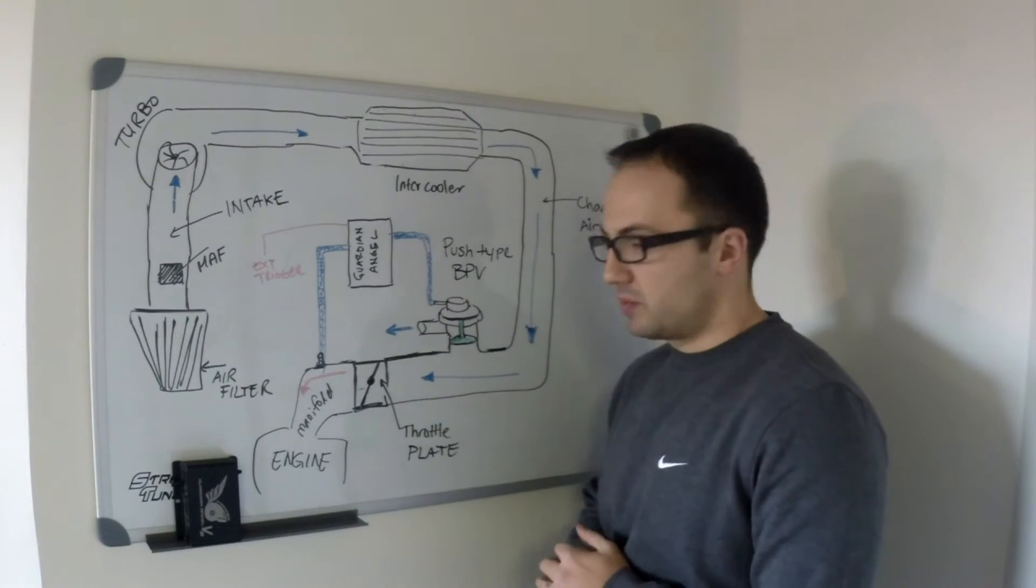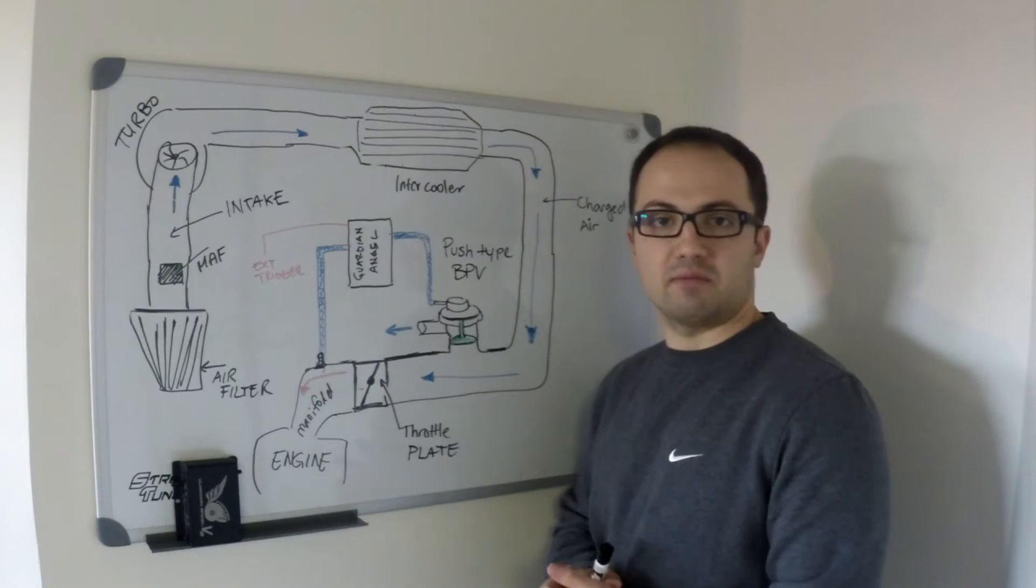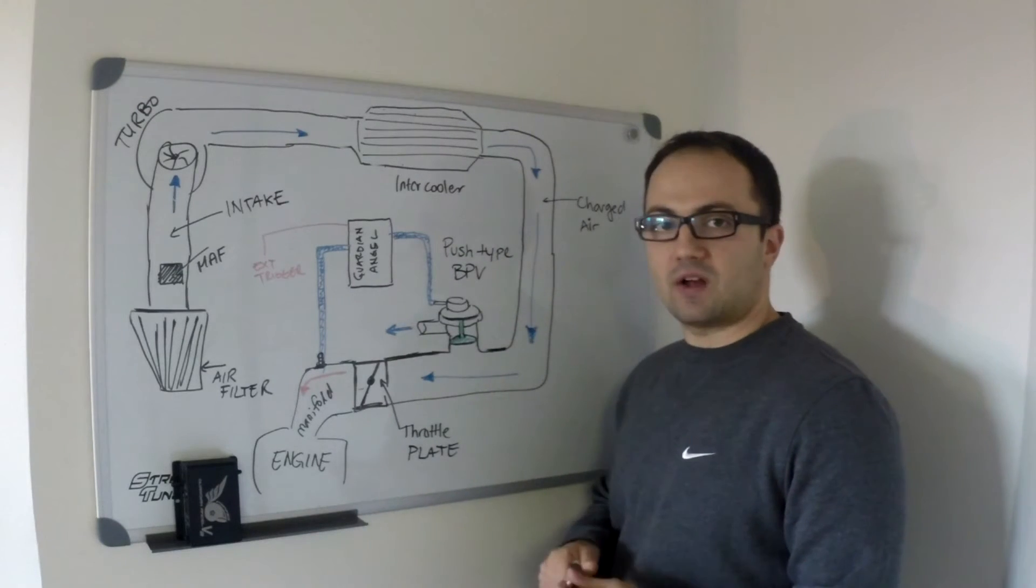If your manifold boost pressure exceeds what you preset—and you can preset anywhere from 10 to 45 psi—then the Guardian Angel immediately opens up the bypass valve.